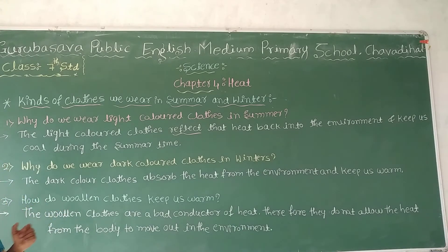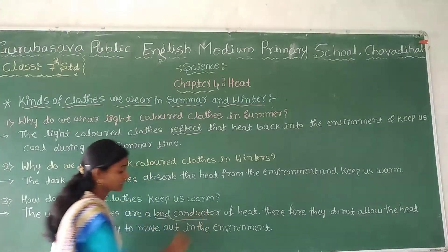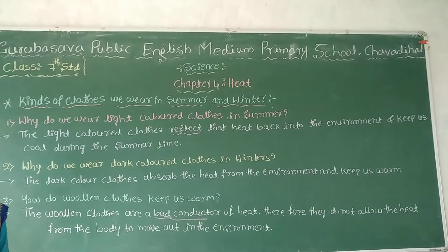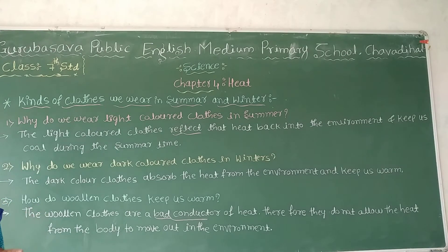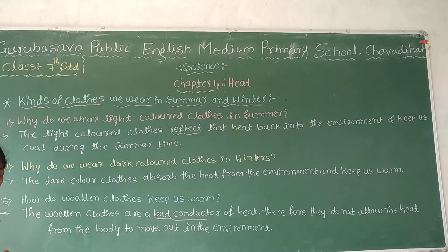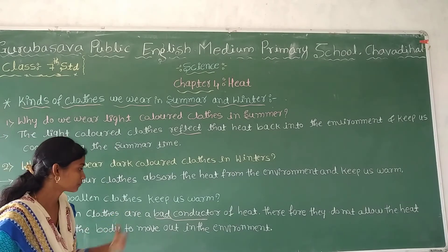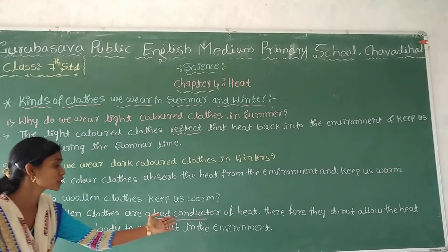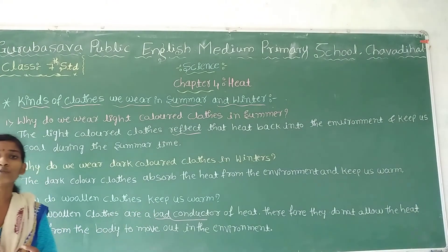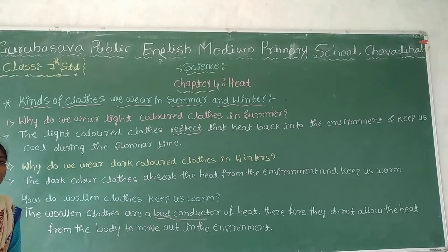Woolen clothes are bad conductors. They prevent the flow of heat from our body to our surroundings, so we feel warm. Bad conductors are materials which do not allow heat to flow through themselves. Materials which do allow heat to flow through themselves are called conductors — for example, aluminum, copper, and steel.